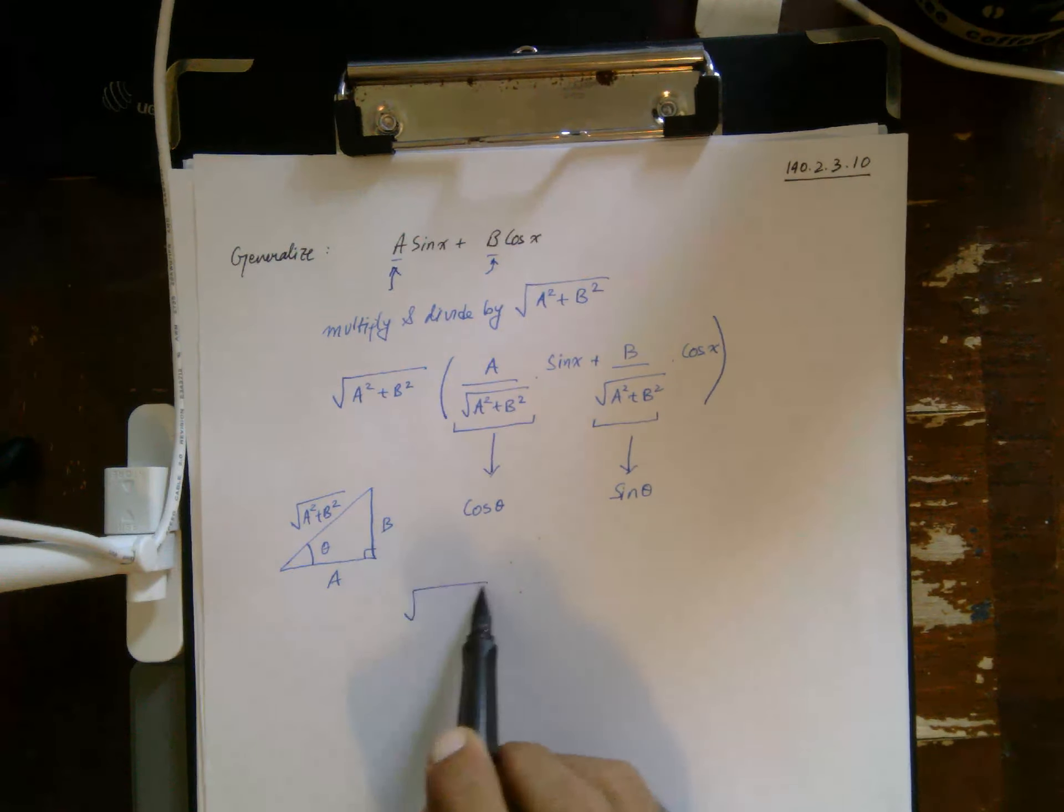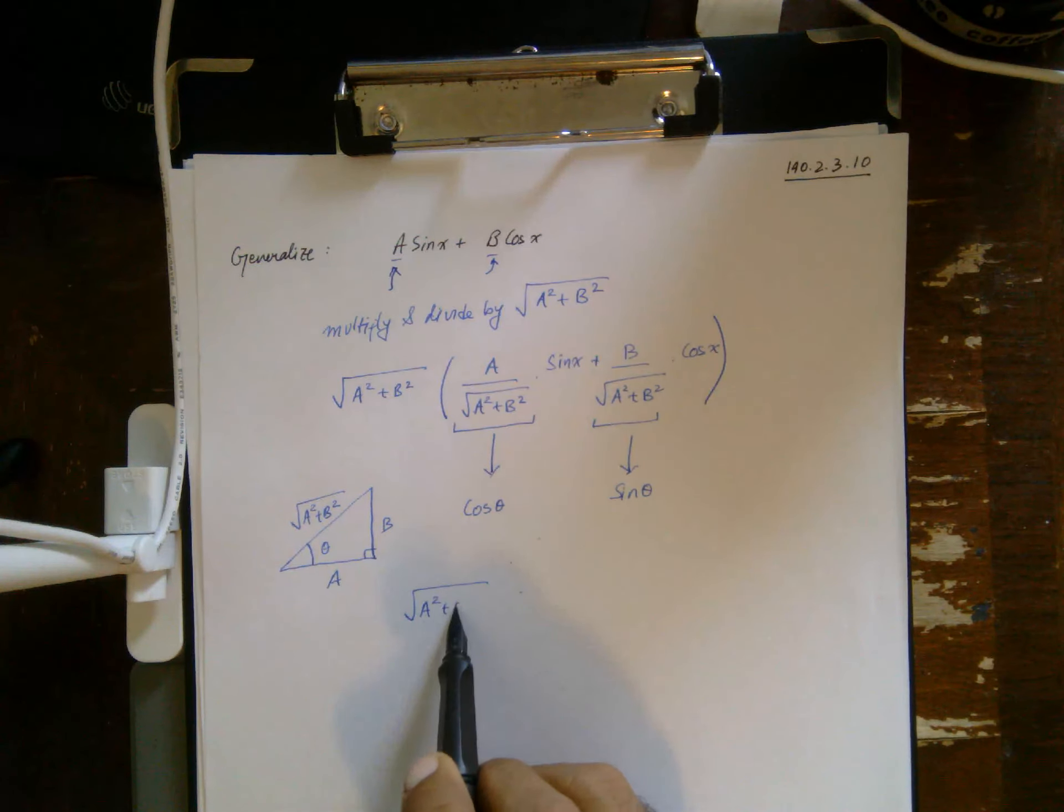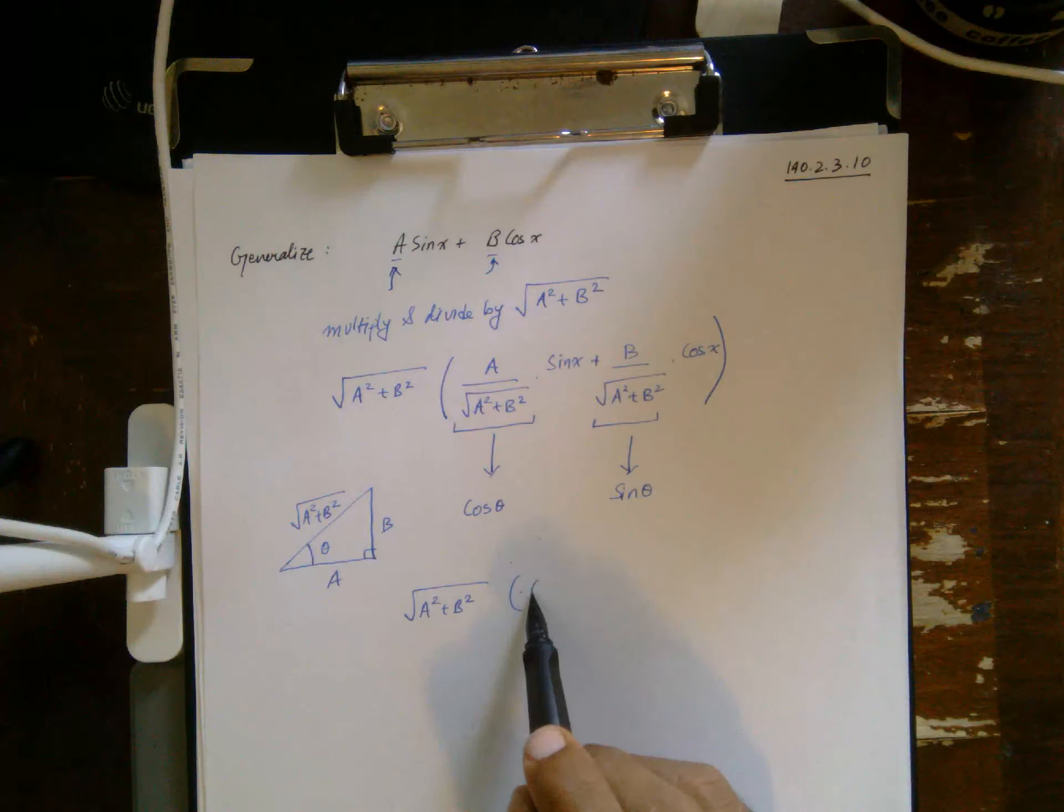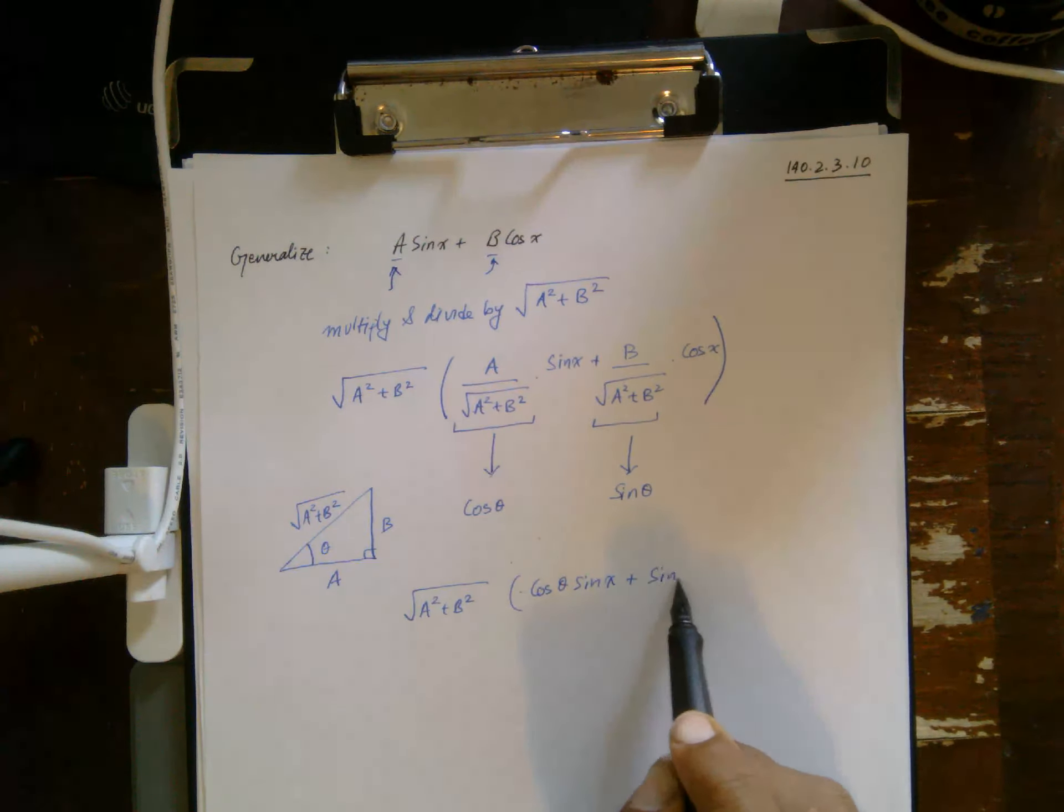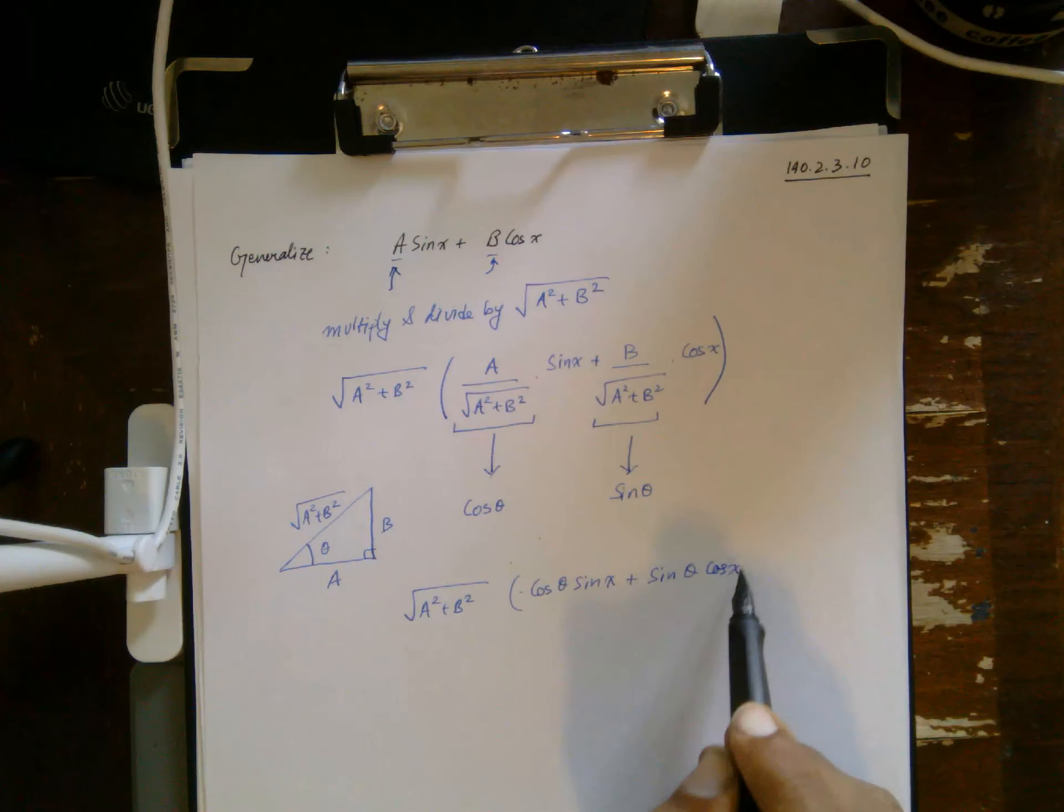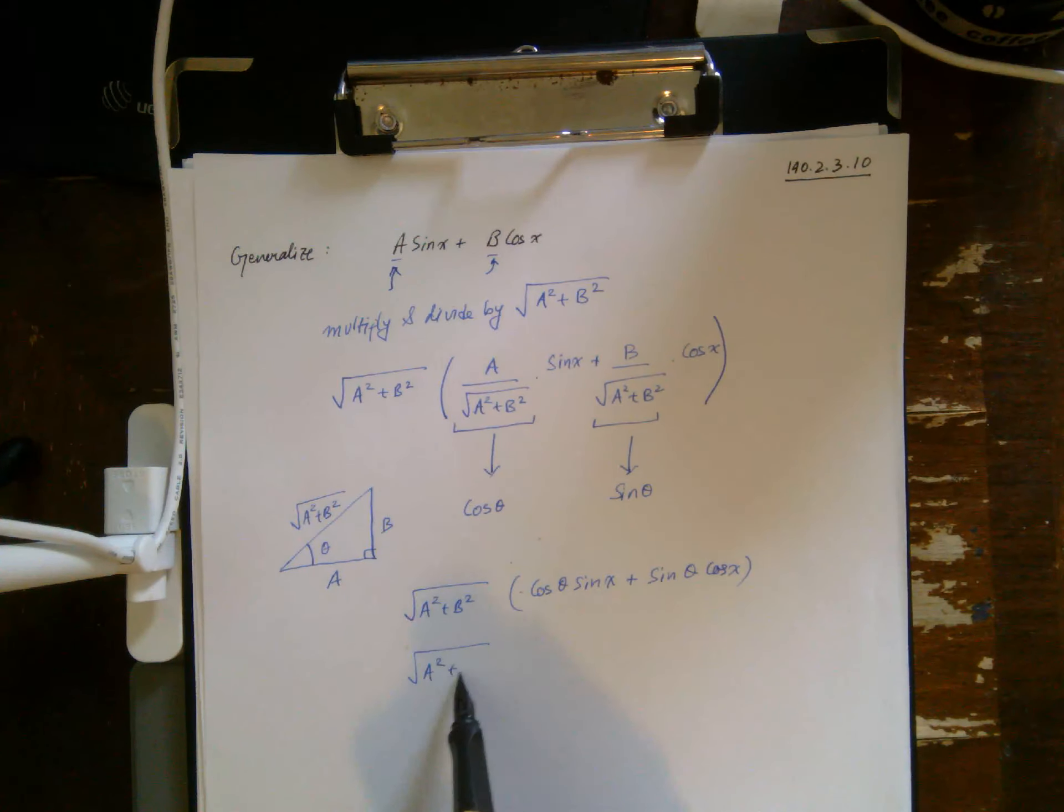So that this becomes square root of a squared plus b squared, cosine theta sine x plus sine theta cosine x, which comes out to the nice neat formula sine of x plus theta.